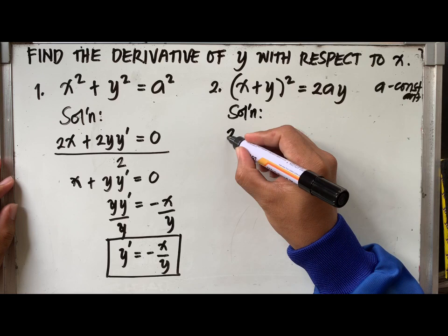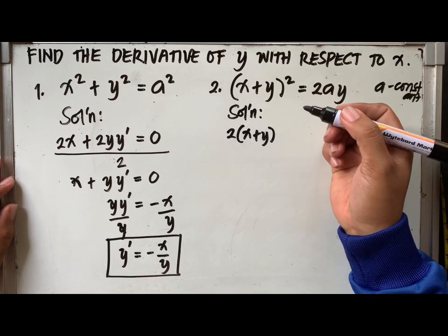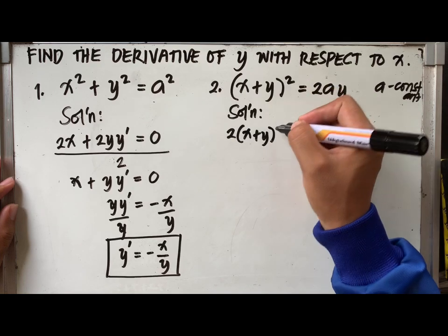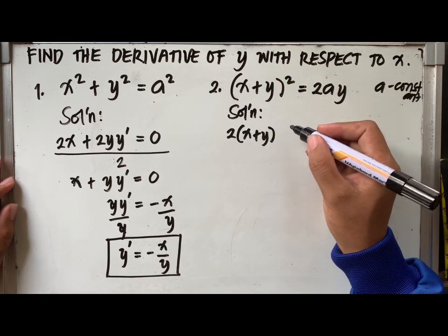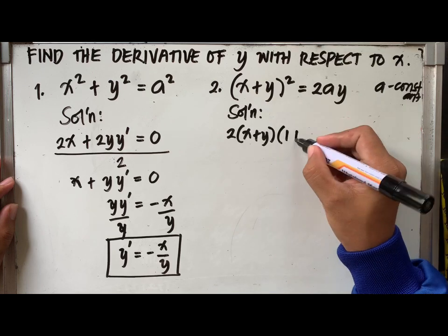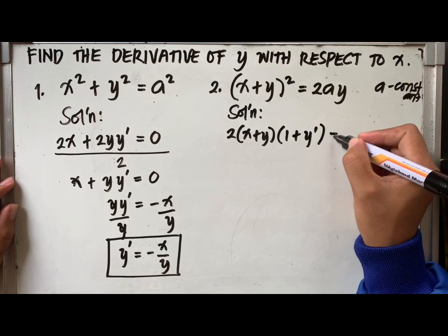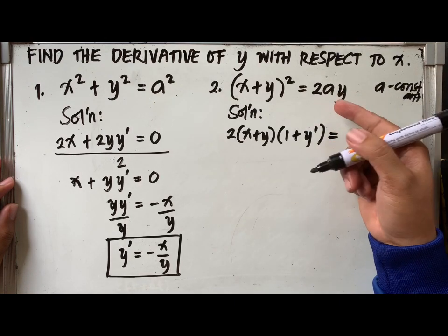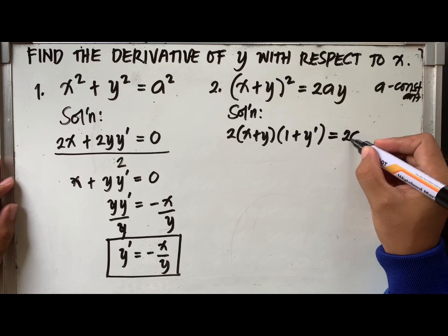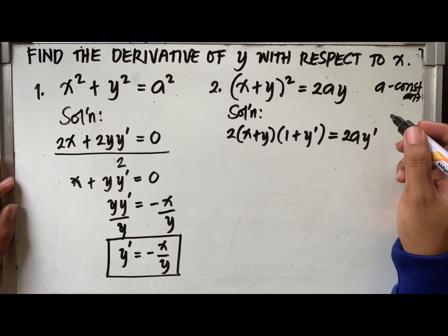Using power and chain rule, the derivative of the left side is 2 times the quantity x plus y times the derivative of x plus y, which is 1 plus y prime. Equal to, the right side will be 2a times y prime.